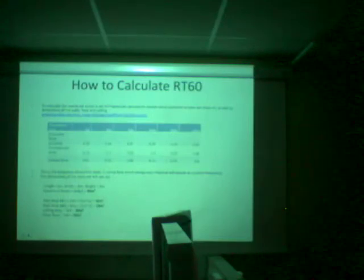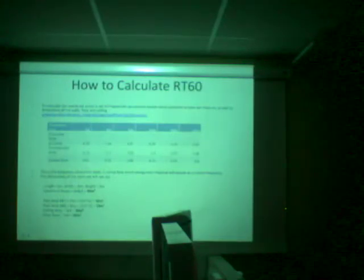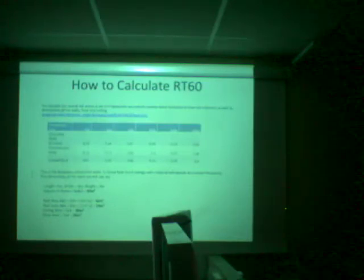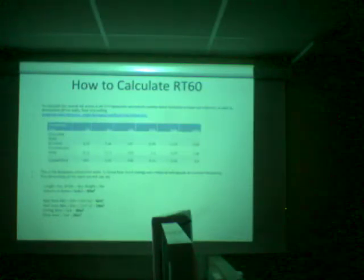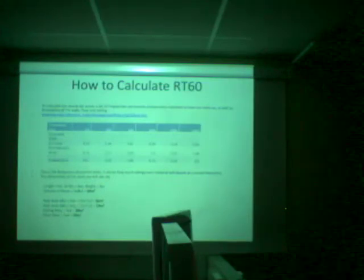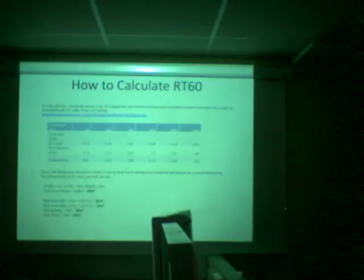The materials chosen are concrete block walls, plaster walls, and carpet floor — with one surface intended to be the ceiling. This is the frequency absorption table, and it shows how much energy each material will absorb at certain frequencies.